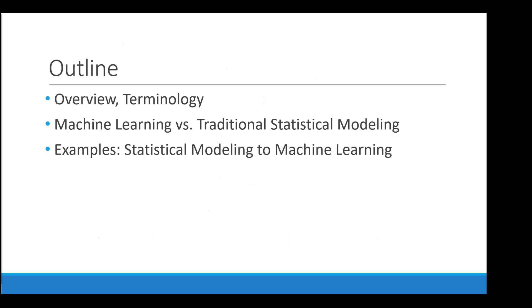As an outline, I'm going to go through a quick overview, review some terminology, talk a little bit about machine learning versus traditional statistical modeling, and then spend the bulk of the time walking through examples of how and why we might move from a more straightforward traditional statistical model to a more complex machine learning algorithm.